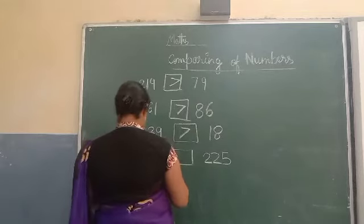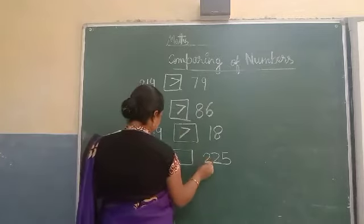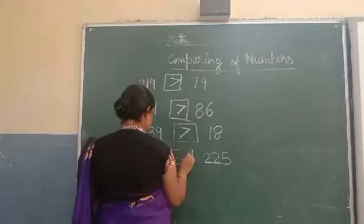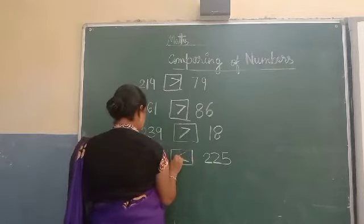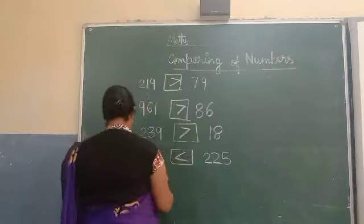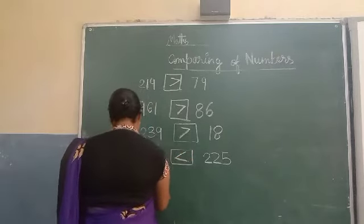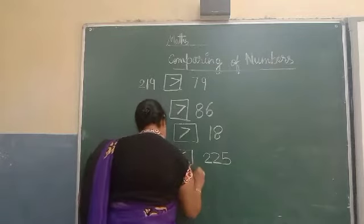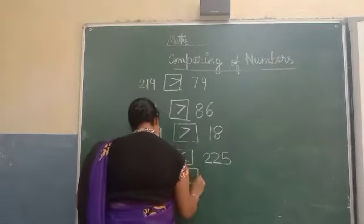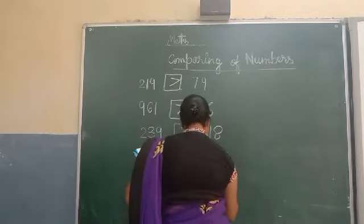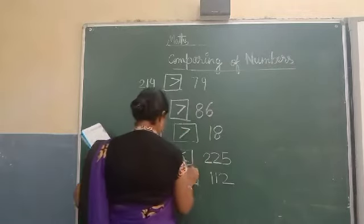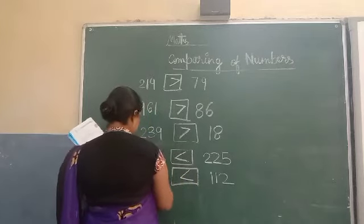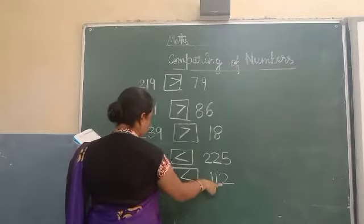Like right here is 90. So, 225 is greater than 19 — put greater than here. Now, 57 is less than 112 — put less than, like this. 57 is less than 112.